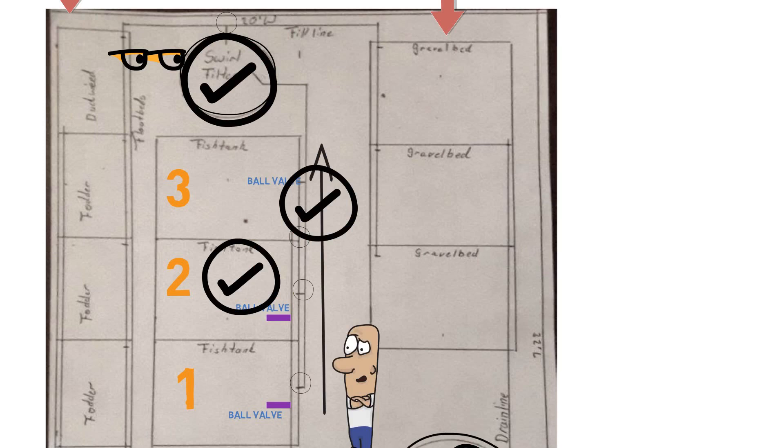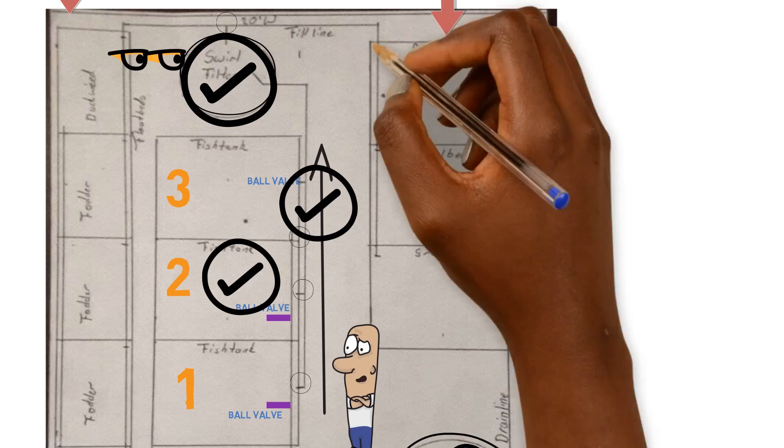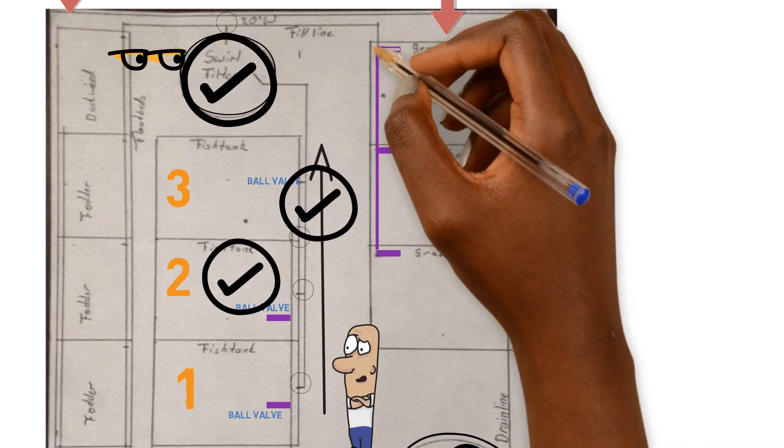So then it comes out. This is fine here. This is fine. So it comes out. You have it split in both ways. So let's focus on the grow bed here. So we have it coming down. We have three separate grow beds and all we need to do is make sure we have ball valves on each one. You have to control the flow.